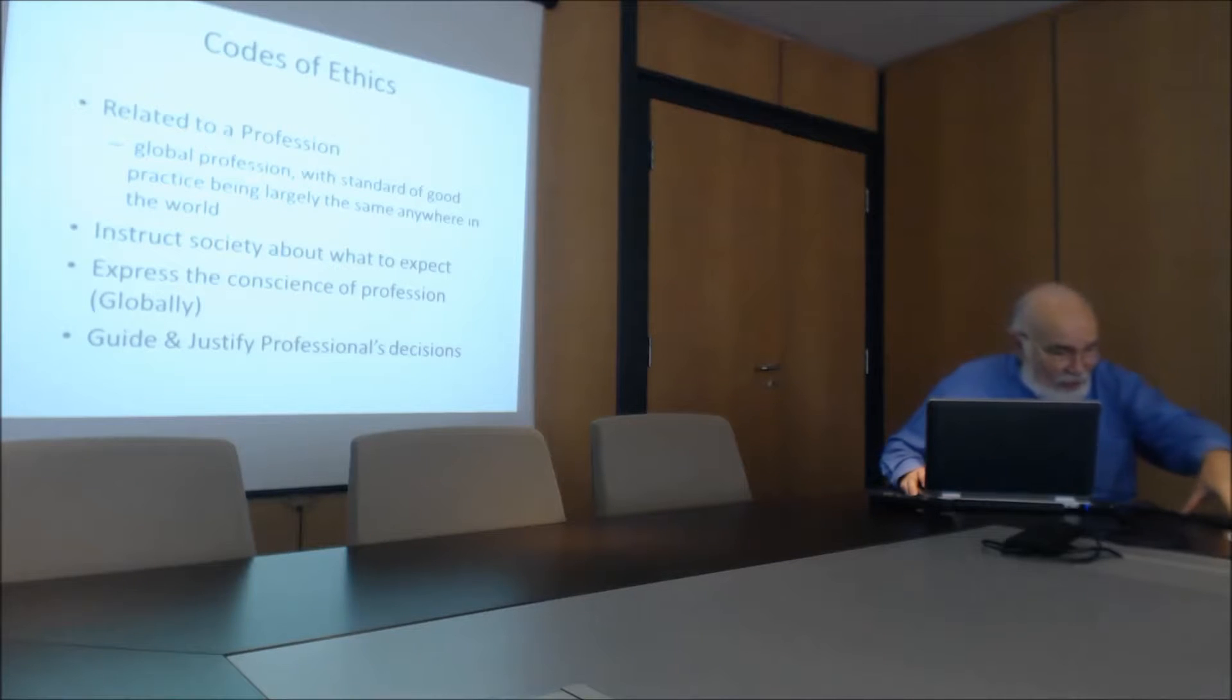A code of ethics is a tool for us because it helps us make tough decisions. If your code of ethics doesn't do that, it's making a mistake. Now some people think in order to make decisions, what they have to do is to list everything saying, you must do mutation testing when you have this type of thing. You must do path testing when you have this type of thing. That's wrong.